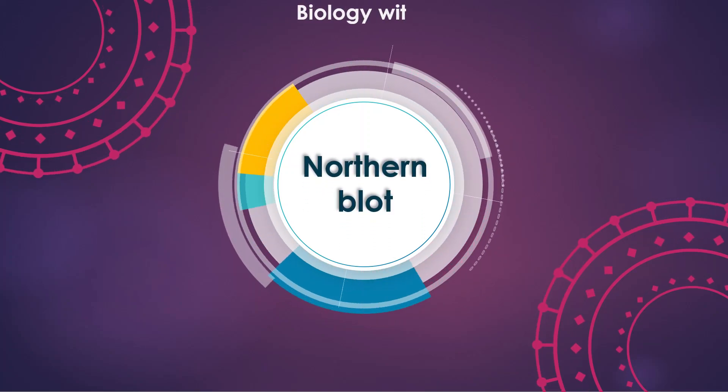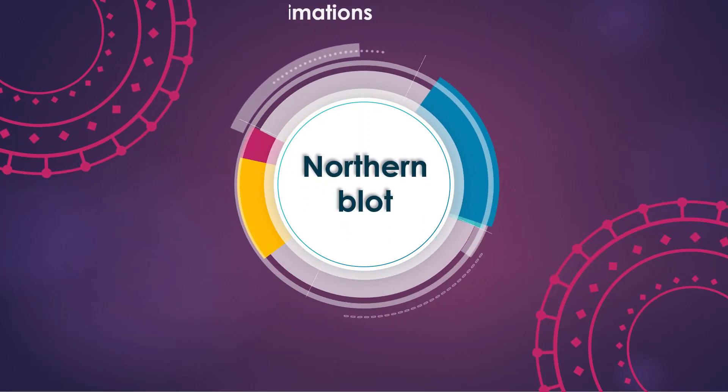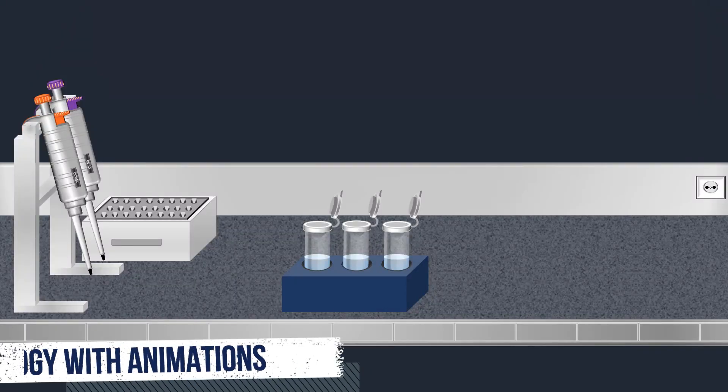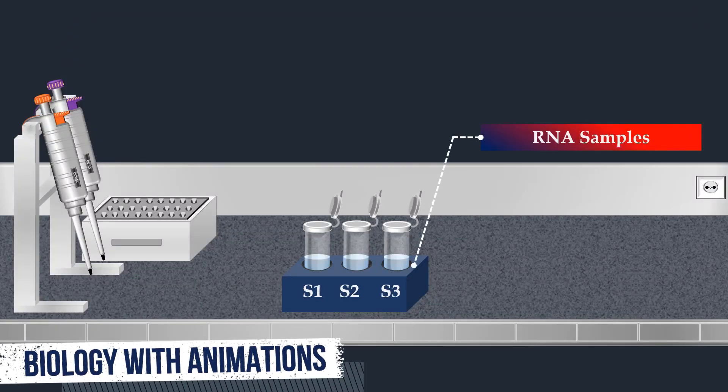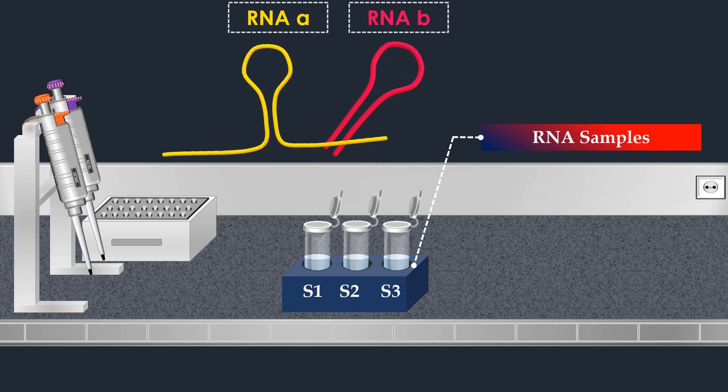Northern blot is a classic technique in molecular biology that reveals information about RNA identity, size, and abundance. It can be used to study gene expression by detection of isolated mRNA in a sample.